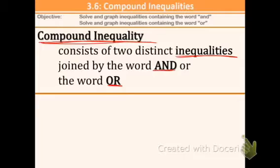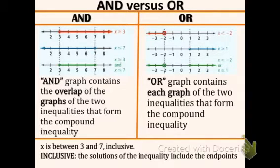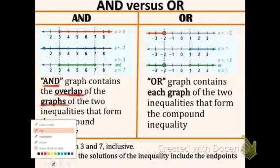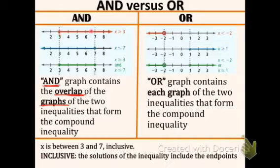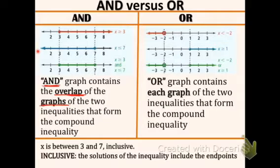Now let's look at those two different inequalities and learn how we can distinguish the difference between them — AND versus OR. An AND graph contains the overlap of the graphs of the two inequalities that form the compound inequality. We have one inequality going one way and another going to the left, and the overlap is the AND inequality. That green graph is the overlap of the red and the blue — another word for overlap would be intersection, or where they cross paths.